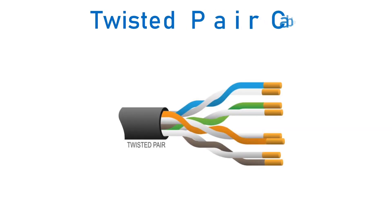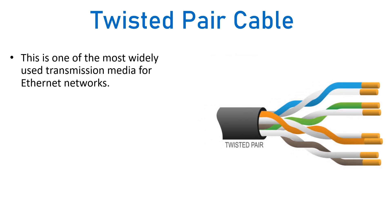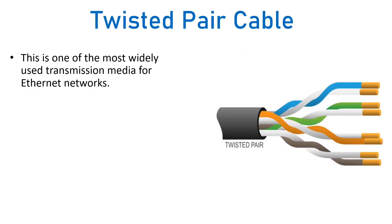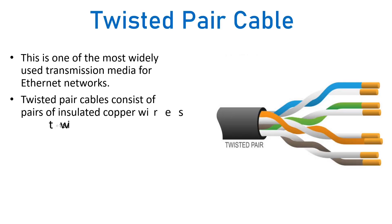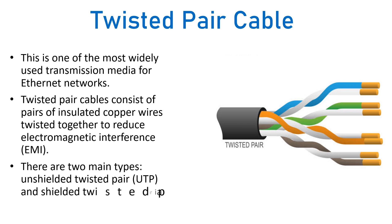Twisted pair cables are the widely used transmission media, especially in local area networks and Ethernet networks. Ethernet networks are small networks created with cables and Ethernet ports. Twisted pair cables consist of pairs of insulated copper wires twisted together in order to reduce electromagnetic interference. Twisted pair cables are of two types: unshielded twisted pair (UTP) and shielded twisted pair (STP).